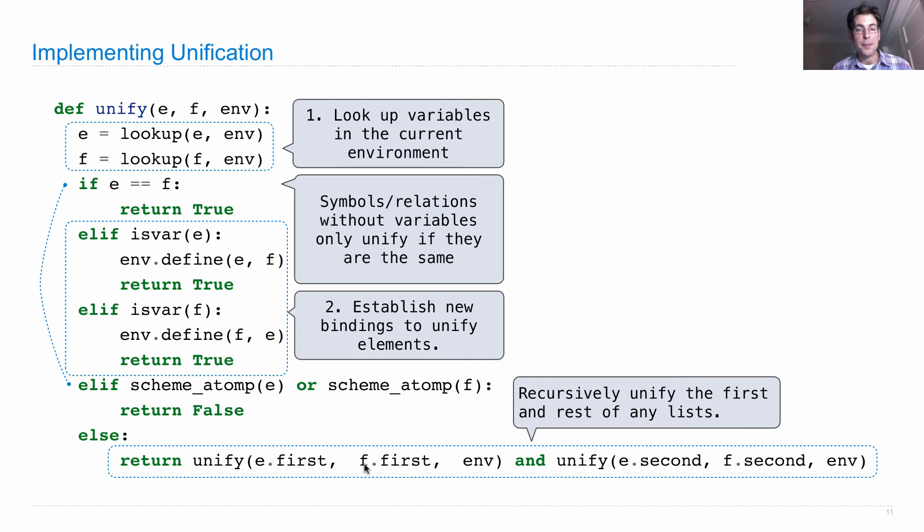So if e and f are both lists, we'll get the first element of e and f, and we'll get e dot second and f dot second, which are the rest of those respective lists. So we're pattern matching piece by piece.